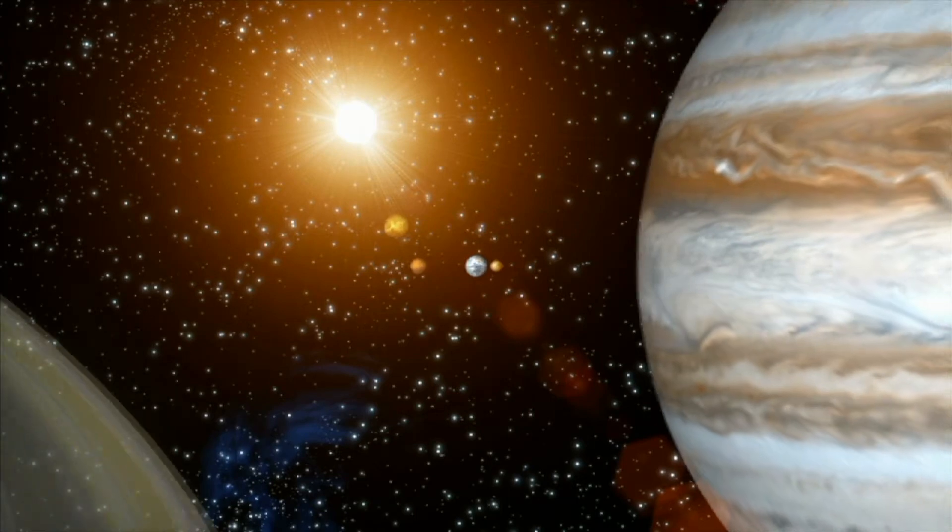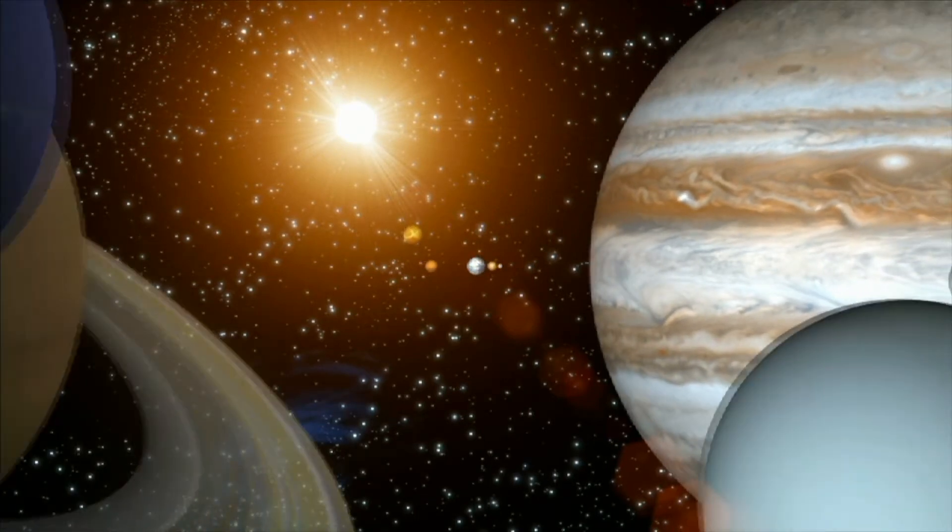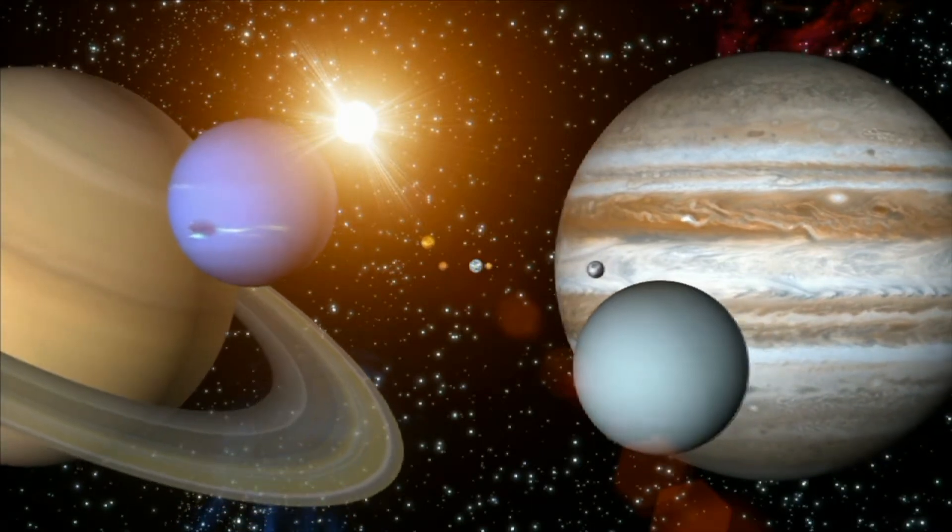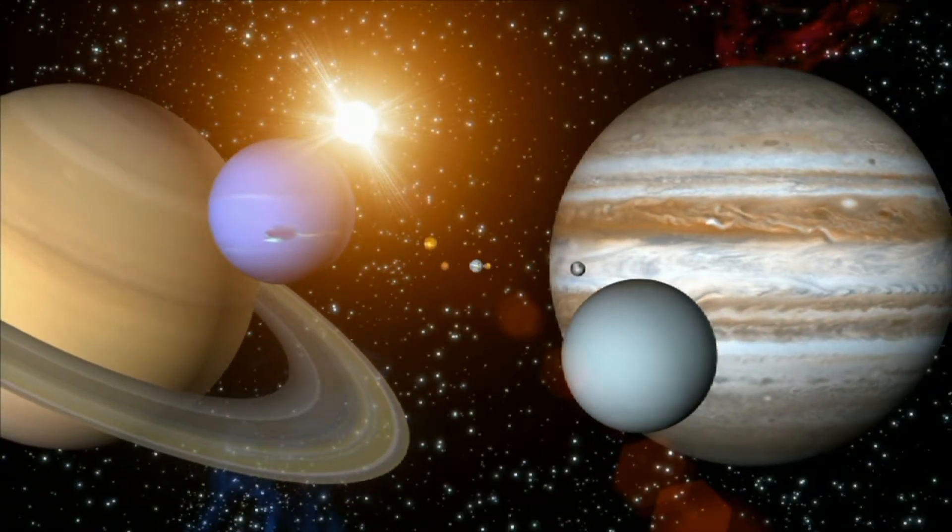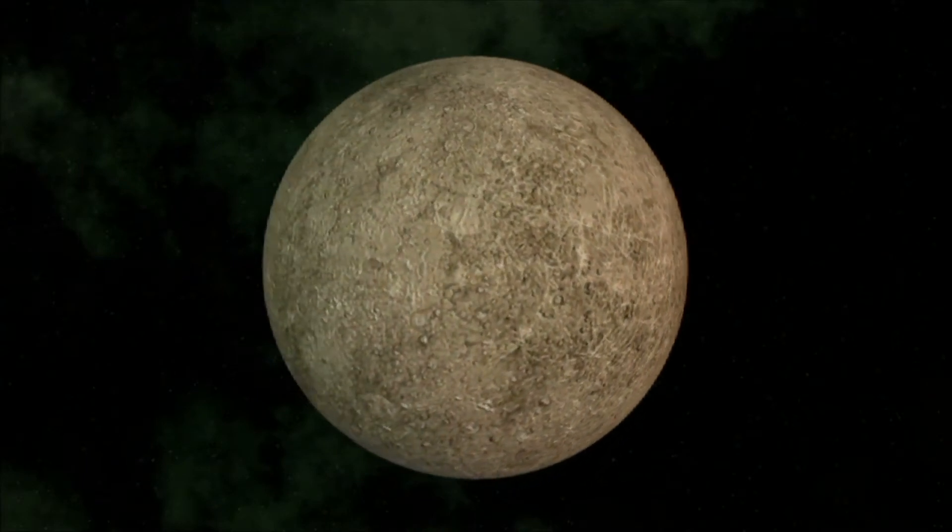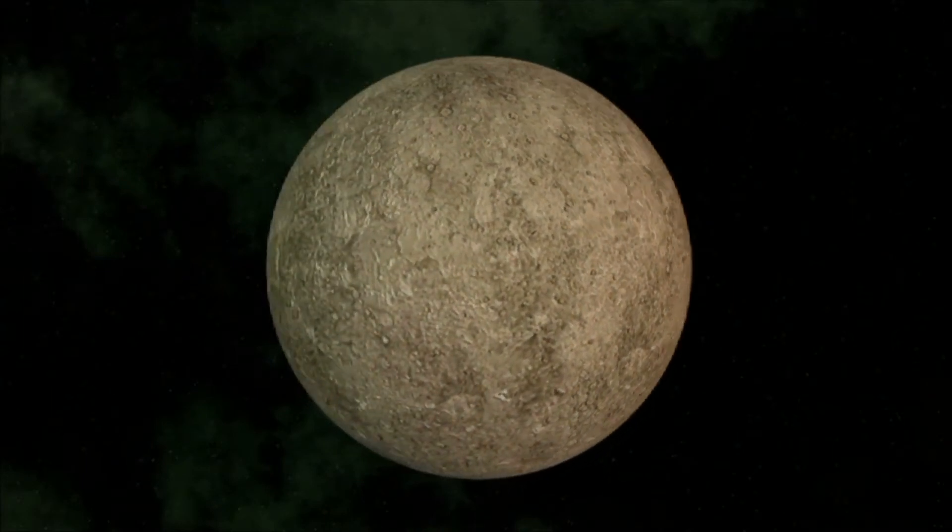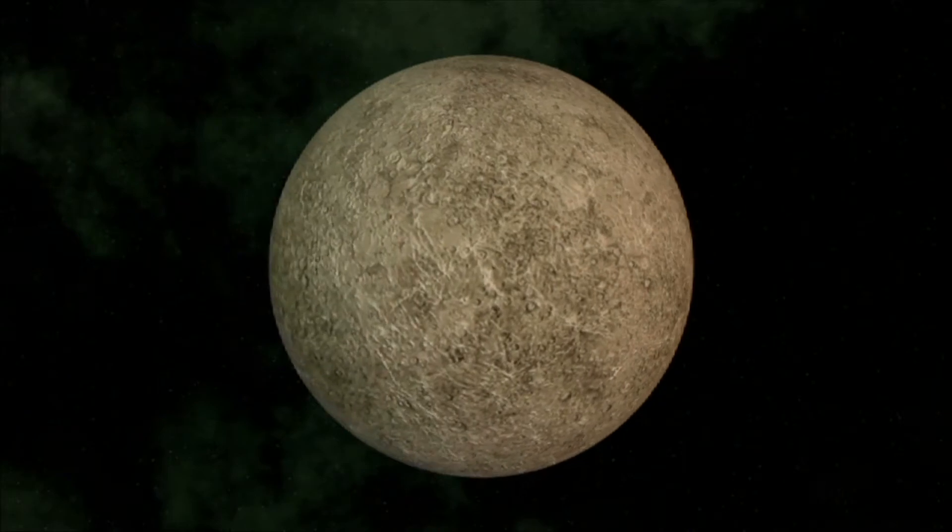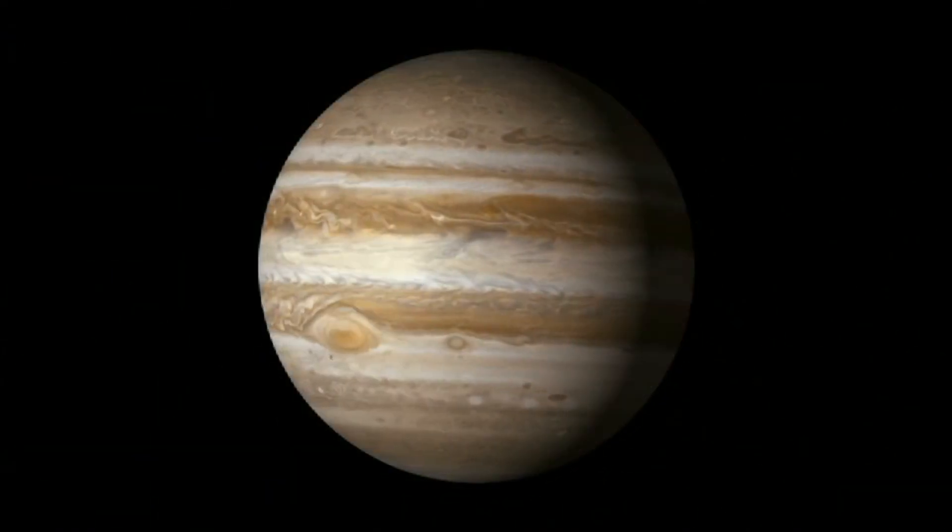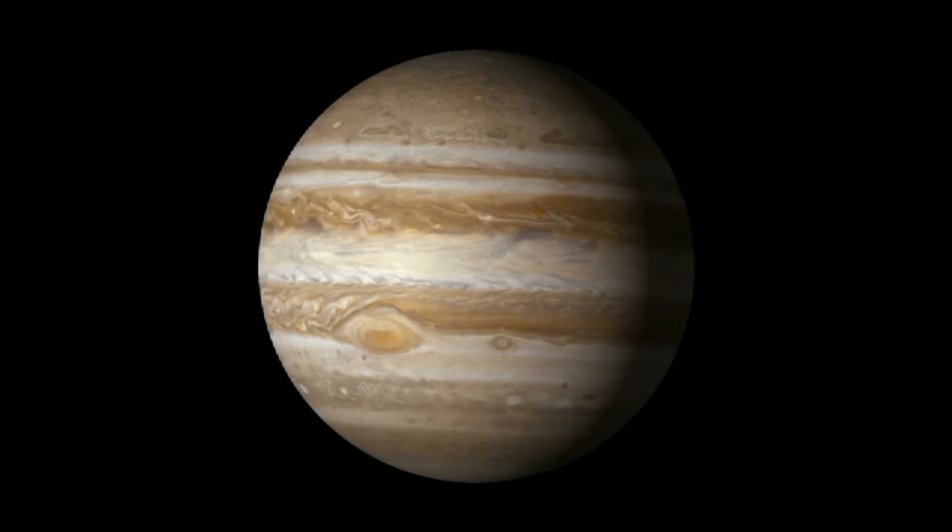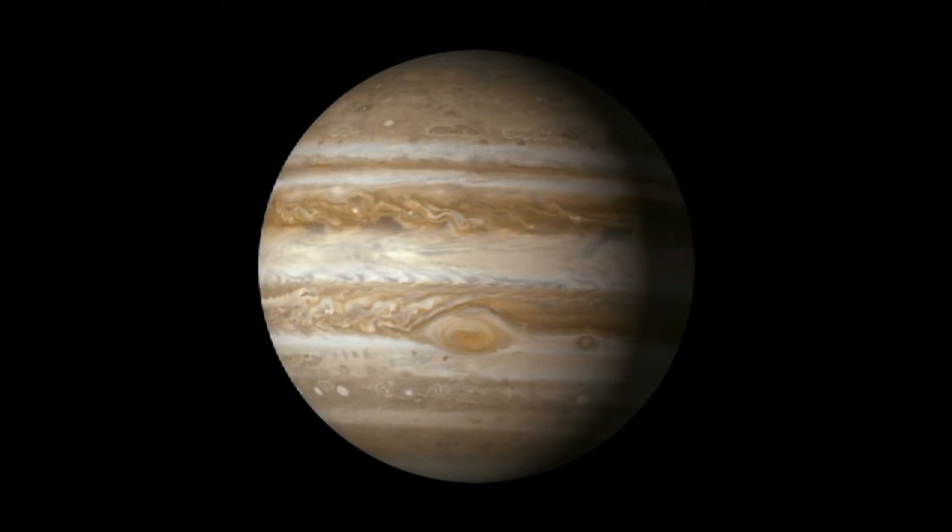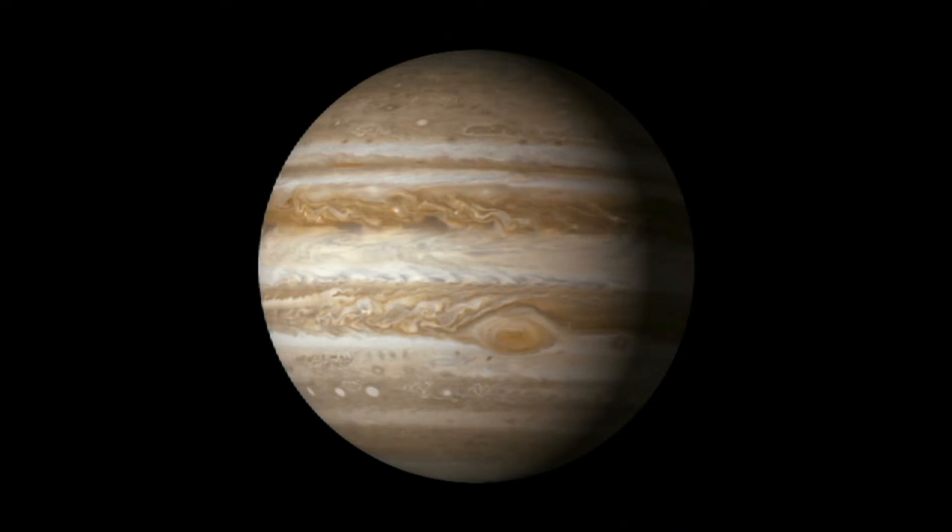Different planets in our solar system take different amounts of time to rotate. Mercury rotates very slowly. It takes 59 Earth days to make one rotation, while Jupiter takes only about 10 hours to make one rotation. Jupiter is the fastest rotating body in the solar system.